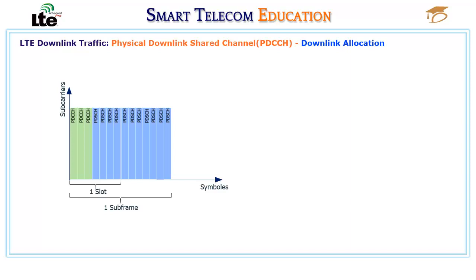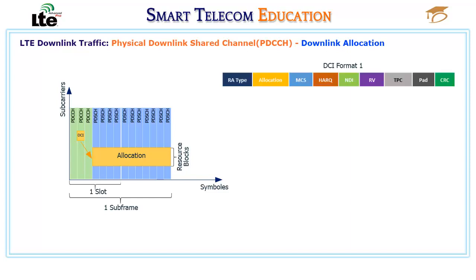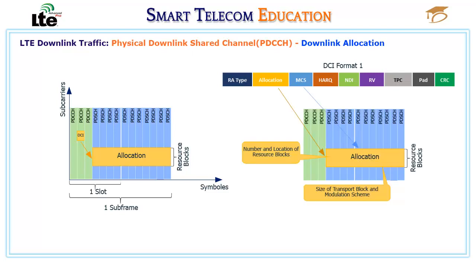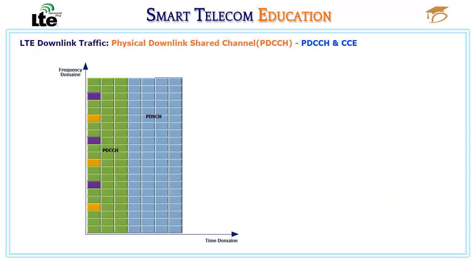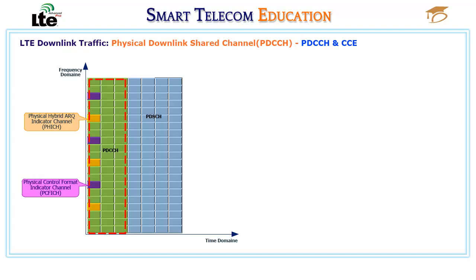In each subframe, the UE reads the PDCCH, located in the first 1 to 4 symbols of the first slot, looking for the DCI with the matching CRNTI. If found, the UE can read the allocation information, which contains the allocated RBs, type of allocation, and how the data is coded. PDCCH is transmitted in the beginning of each downlink subframe in resource elements not used for reference signals, PHICH, or PCFICH.